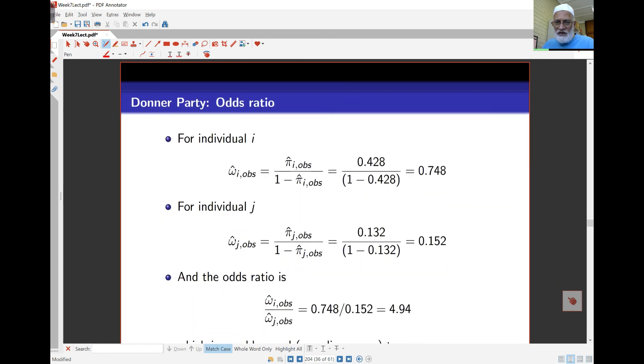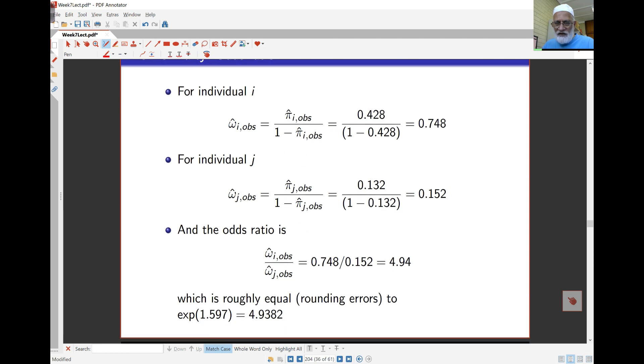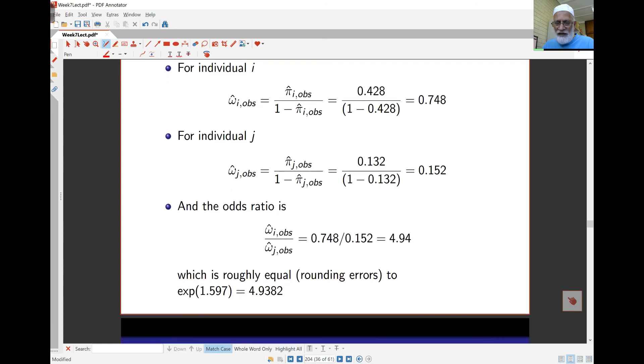For individual R, we can see probability is 0.748, odds of survival is 0.748. For individual J, it's 0.152 as far as odds go. If I divide those odds together, I get the 4.94 I had earlier.